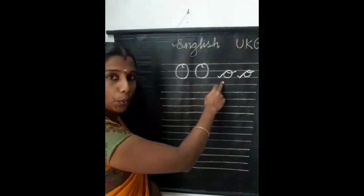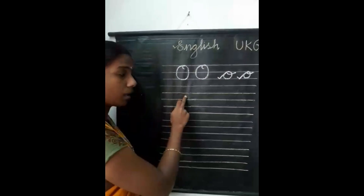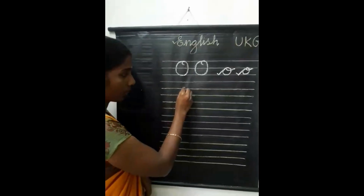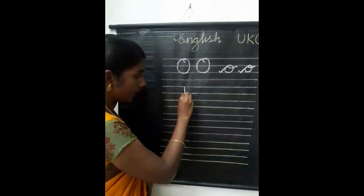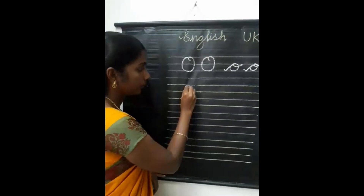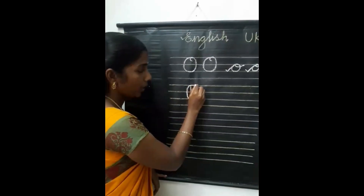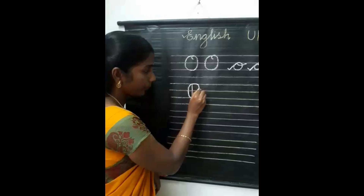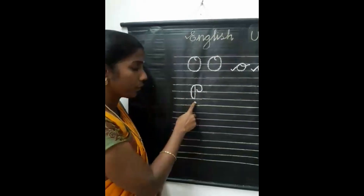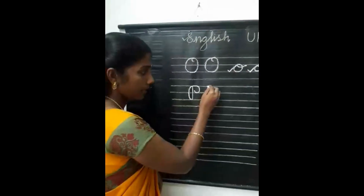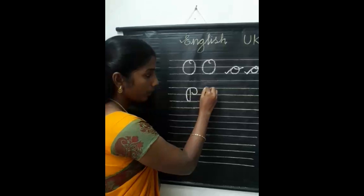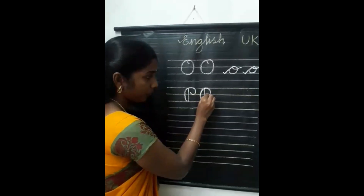What letter will come after O? P. Now let me see capital letter P. First you write a standing line, then from here write a right curve going up, then from here write a left curve. This left curve should not touch the standing line. Now you will get capital letter P.